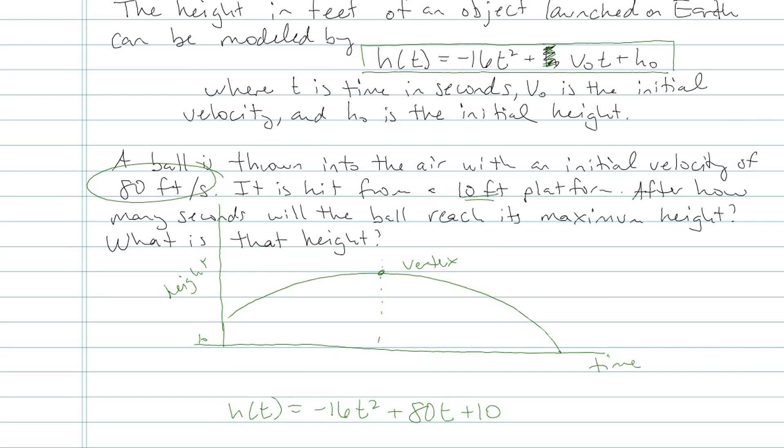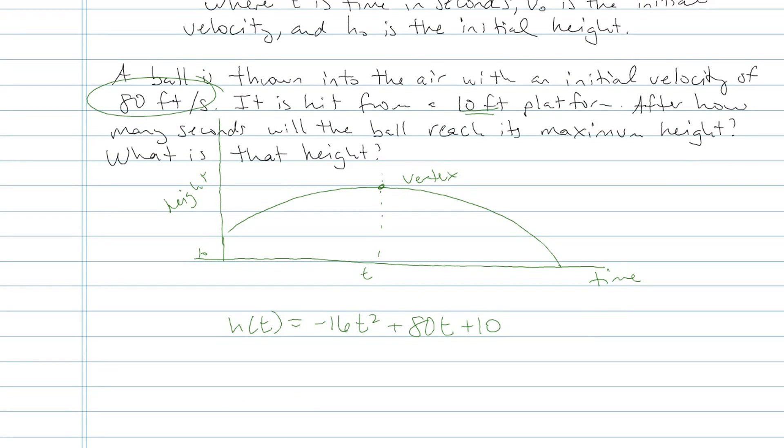And to figure out how long, what's the time until it reaches the vertex, I'm going to do my equation for the vertex which is -b over 2a. In my case, -80 over 2 times -16. Negative 32. And so a negative divided by a negative is going to give me a positive and then I get 2.5 seconds. So that tells me it takes 2.5 seconds for the ball to get as high as it's ever going to go.